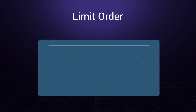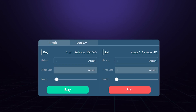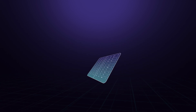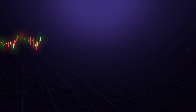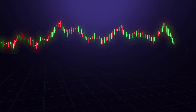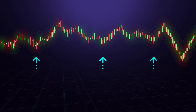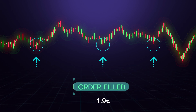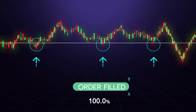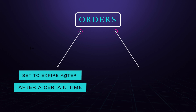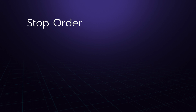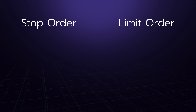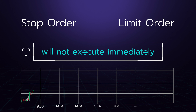Limit order: an order to buy or sell at a specific price. This type of order will wait until it has a matching order before it executes. A limit order on the Genius DEX can be partially filled or fully filled, meaning if the order cannot be completed in one execution, it will stay active and continue buying amounts at the specified price until it is completely filled. Additionally, orders can be set to expire after a certain time or remain active until cancelled.